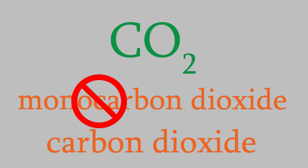We do still use the prefix mono if it belongs on the second word in the name. For example, this molecule has the formula CO. There's one of each element, so each one would usually get the prefix mono, but we leave it off the first word, but not the second. So this would be called carbon monoxide.